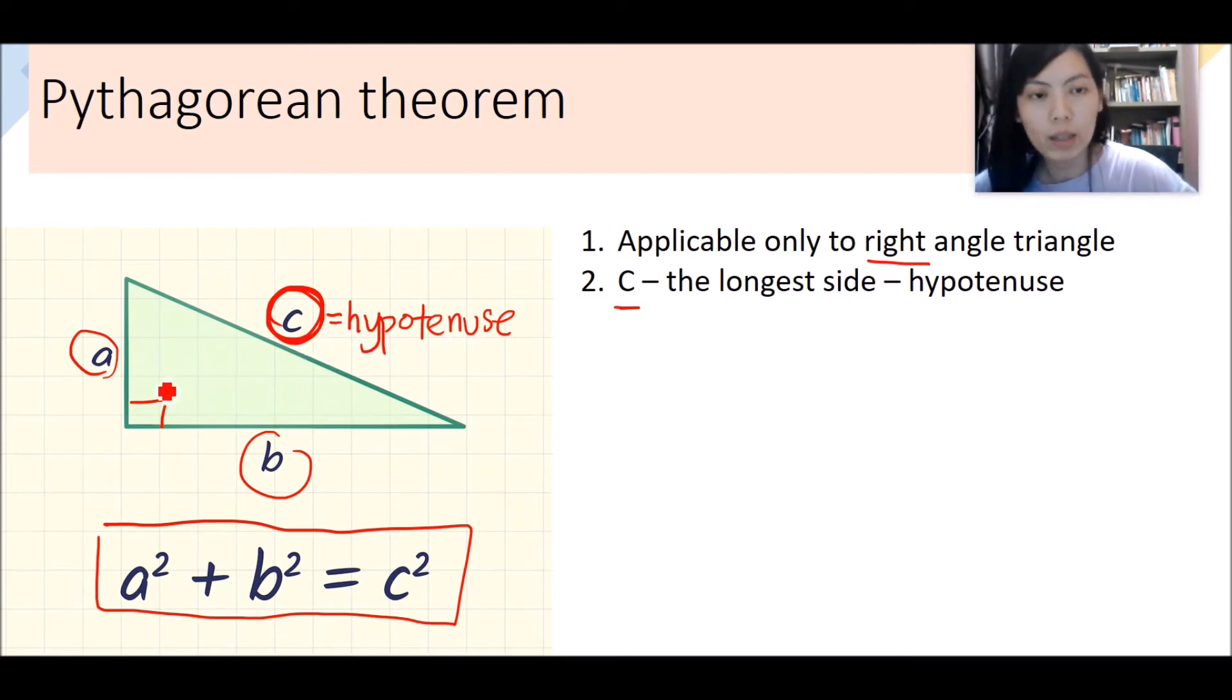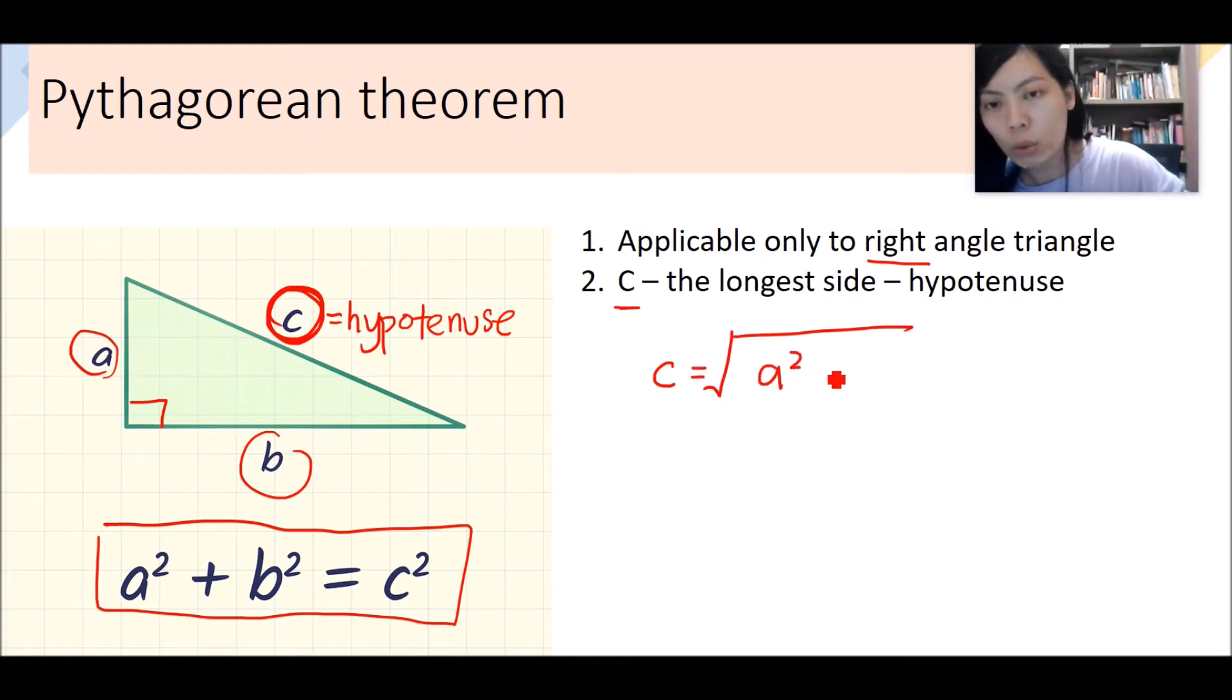For example, right now, if a and b are given, how do we find the length of side c? It will be c equals the square root of a squared plus b squared.